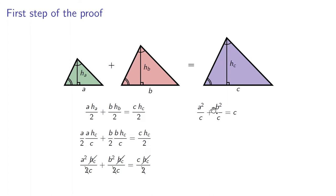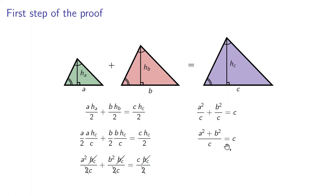Now, we merge the left-hand side into a single fraction: A squared plus B squared, all over C, equals C. Finally, we multiply both sides by C. The end result is A squared plus B squared equals C squared. This equation shows the relationship between the three bases of the similar triangles. Therefore, if we have three similar triangles such that the sum of the areas of the two smaller ones is equal to the area of the larger one, then the sum of the squares of the bases of the two smaller triangles will be equal to the square of the base of the larger triangle.